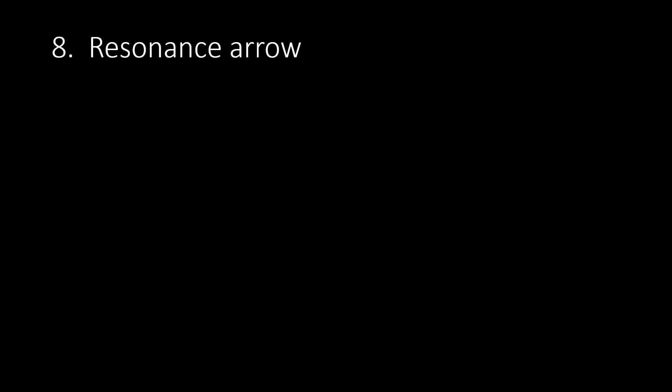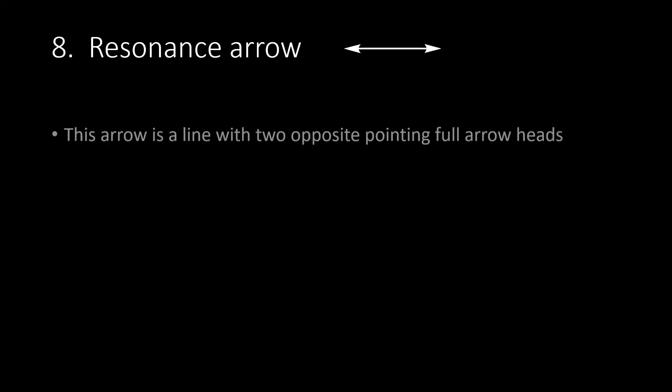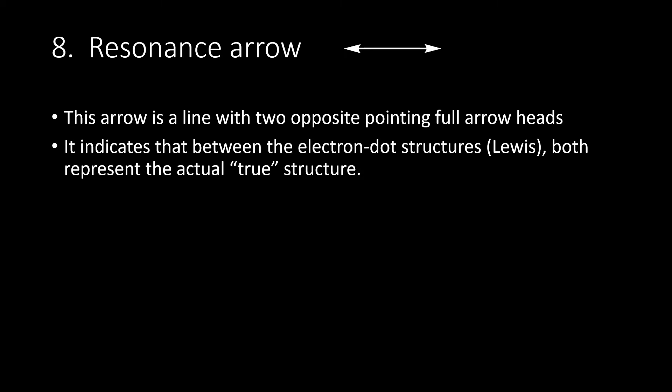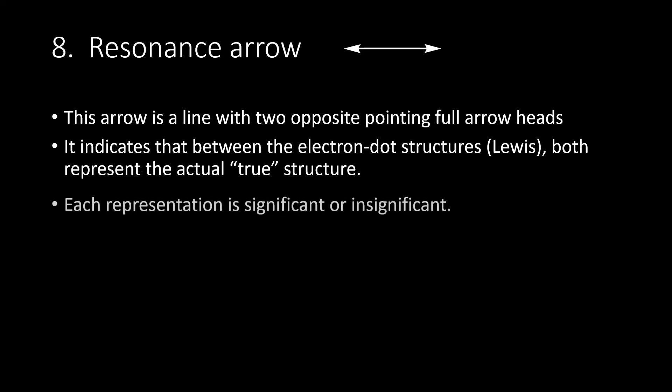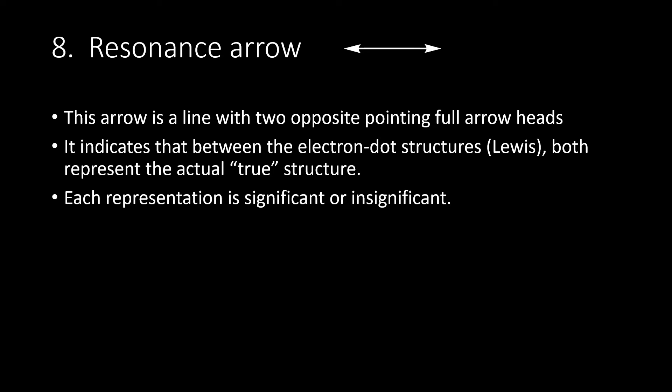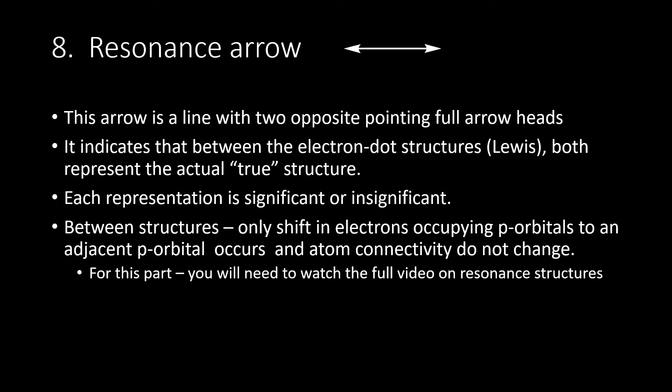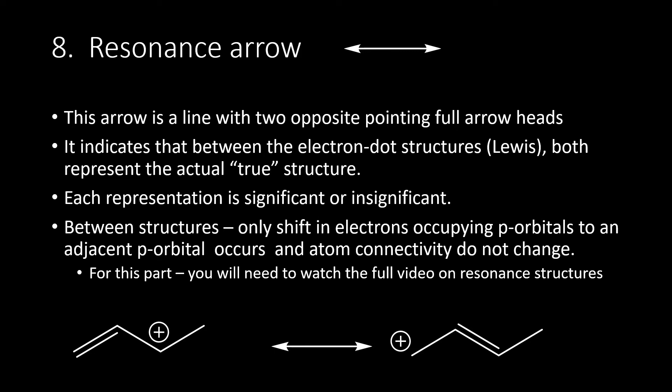Number 8: the resonance arrow. This arrow is aligned with two opposite full arrowheads. It indicates that the electron dot structures or Lewis structures shown both represent the actual true structure of the molecule, and each representation is either significant or insignificant. Between structures, only a shift in electrons occupying a p orbital to an adjacent p orbital occurs, and atom connectivity does not change. You will need to watch the full video on resonance structures. This is an example of resonance structures between two allylic cations — which one do you think is the more significant structure?